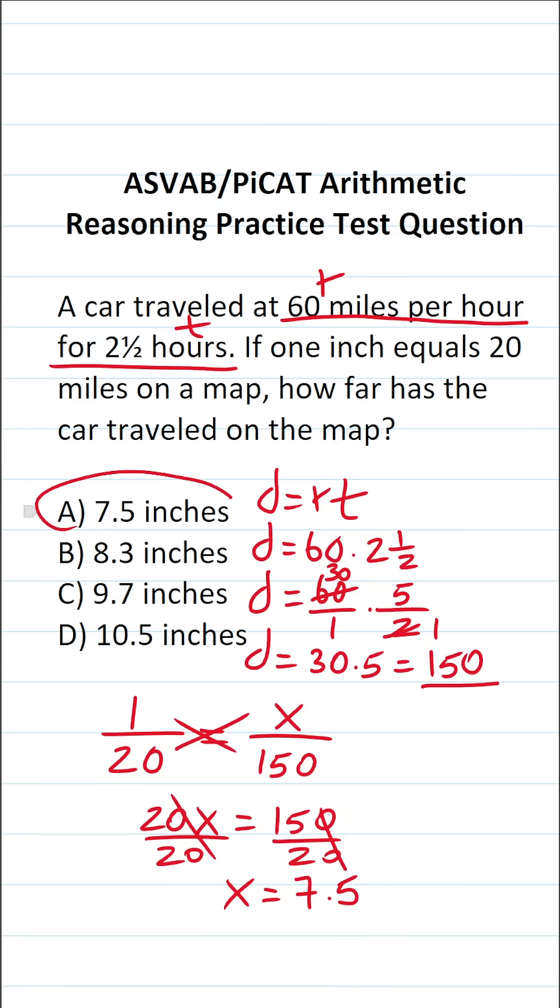So in other words, the car went 7.5 inches on the map. If you couldn't do 15 divided by 2 mentally, you could always do the long division. 2 goes into 15 seven times without going over. 2 times 7 is 14. 15 minus 14 is 1. We're going to add a decimal and a zero placeholder, bring that decimal into our answer, drop down this zero. 2 times 5 is exactly 10 with no remainder. This one is A.